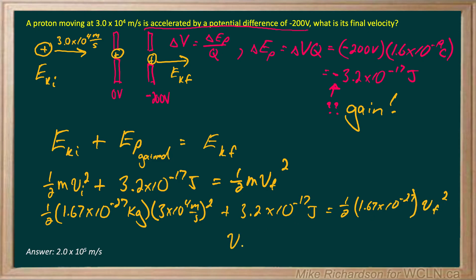And I work all that through, solve for V final, and I get 2.0 times 10 to the 5 meters per second. It's moving faster because it's getting accelerated by that negative plate.